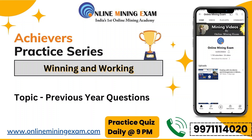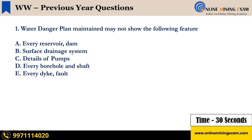The first question: A water danger plan maintained may not show which of the following features? A. Every reservoir dam. B. Surface drainage system. C. Details of pumps. D. Every borehole and shaft. E. Every dike fault. Your time starts now.